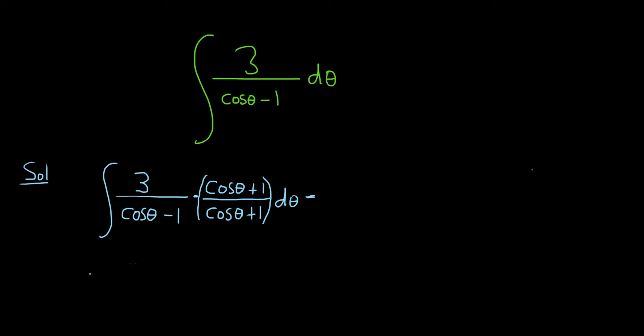And so why did we do this? Well, watch what happens. So we can distribute the 3 upstairs, so it'll be 3 cosine theta and then 3 times 1 will give us 3. Then in the denominator, here's where the magic happens. This is a minus b times a plus b. And we know for math that that is a squared minus b squared. It's called the difference of squares.